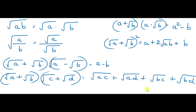Here are some identities. The first one: root AB is equal to root A into root B. Similarly, root A by B can be written as root A divided by root B.